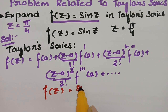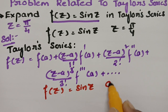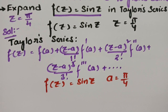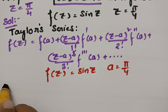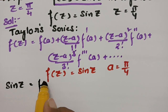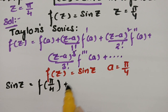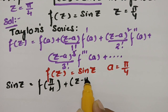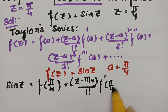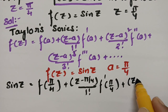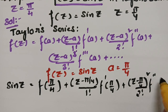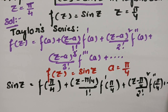I am keeping f(z) as sin(z) and a value as π/4. After substituting, sin(z) equals f(π/4) plus (z − π/4)/1! · f'(π/4) plus (z − π/4)²/2! · f''(π/4) plus and so on.